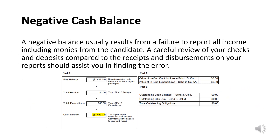A negative cash balance usually results from a failure to report all income, contributions, or loans. Alternatively, the error could result from expenditures being overstated, duplicated, or the committee overdrafting their campaign finance bank account. Another common error is that committees often record in-kind contributions as expenditures. For example, if a candidate purchases $20 of pizza as a thank you to campaign workers and pays out of his or her own pocket without asking the campaign for reimbursement, this would be recorded as an in-kind contribution. Conversely, if a candidate paid for pizza out of pocket and was subsequently reimbursed, this transaction would be recorded as an expenditure. If a transaction should have been recorded as an in-kind contribution but was recorded as an expenditure in error, the committee needs to amend the campaign finance reports to delete those expenditures and enter the transactions as in-kind contributions.